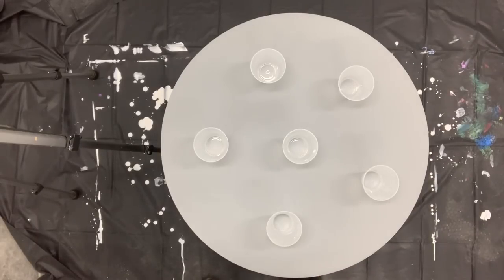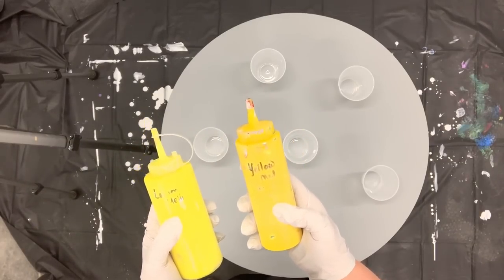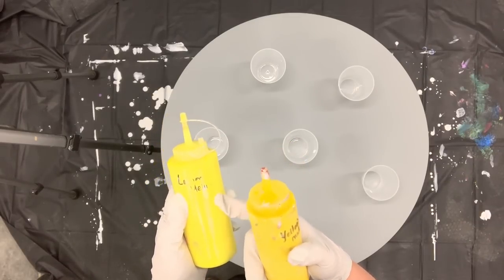The colors I'm using today are yellow medium and lemon yellow. The yellow medium is Master's Touch paint from Hobby Lobby, and the lemon yellow is from Soho.